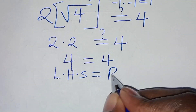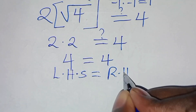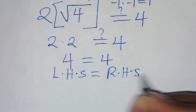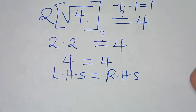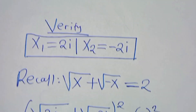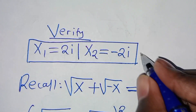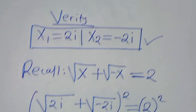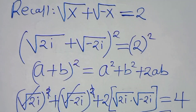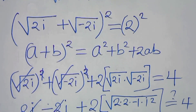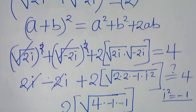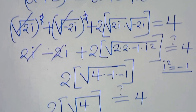So this implies that the left hand side is equal to the right hand side, and this proves that x1 and x2 satisfy the equation. Please refer to the steps, like this video and subscribe. See you in the next video.